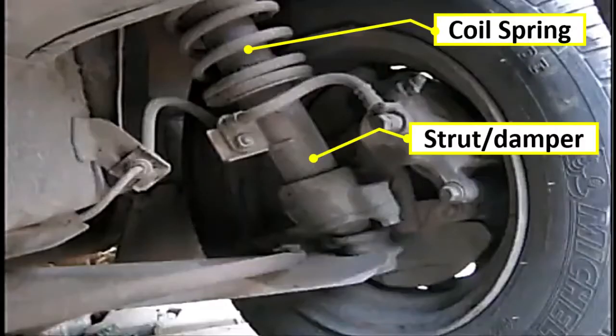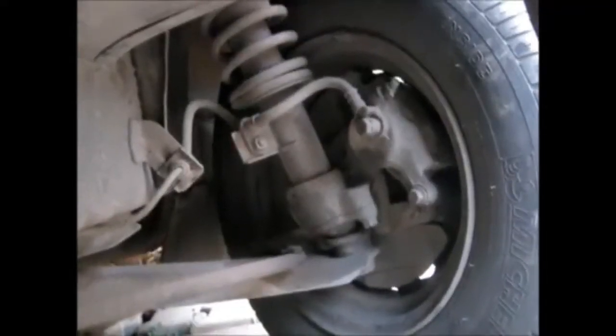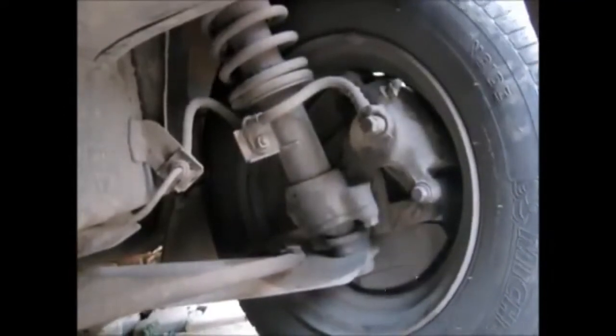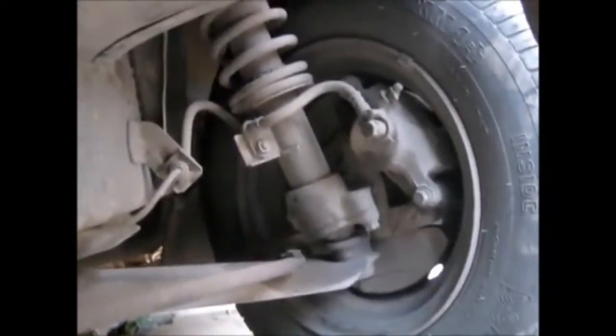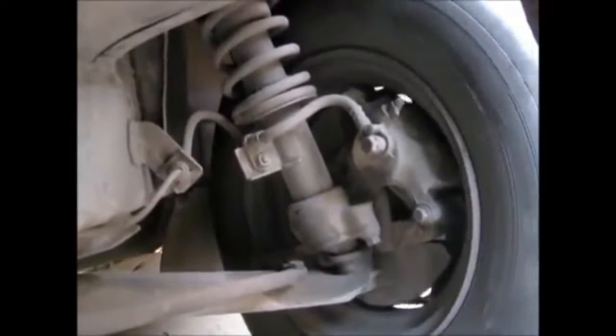MacPherson Strut Suspension system includes a simple assembly of coil spring and damper or shock absorber. The task of spring is to store the energy from a sudden jerk from the road. The damper uses hydraulic fluid to dissipate the energy in form of heat. Together, they restrict unwanted movement of car because of undulations on the road.